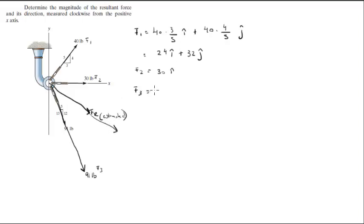Force 3 is going to be 91 times 5 over 13 in the i direction, minus, because we're going in the negative y direction, 91 times 12 over 13 in the negative j direction. When you solve this, you're going to get that this is 35i minus 84j.